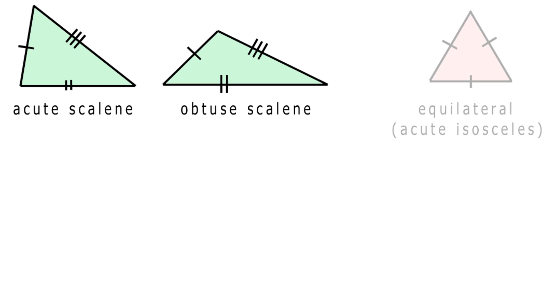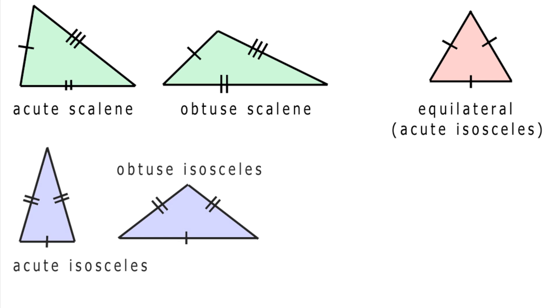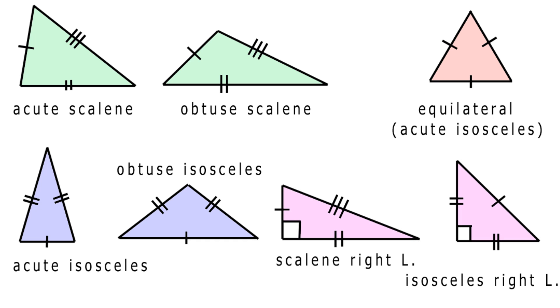Equilateral stays the same. Only one type of equilateral. The sides are the same and the angles are always 60 degrees. You can have an acute isosceles and an obtuse isosceles. And finally you can have an isosceles right angle triangle and a scalene right angle triangle.